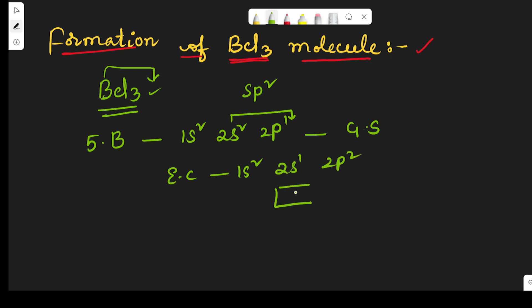In 2s¹ there is only one electron. 2p² means 2px¹ has one electron, 2py¹ has one electron, and 2pz⁰ means the z orbital has no electron. This is the boron outermost shell first excited state configuration.